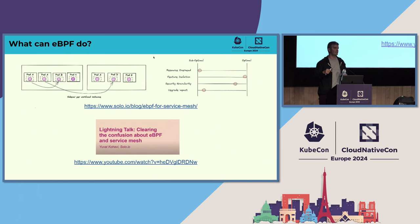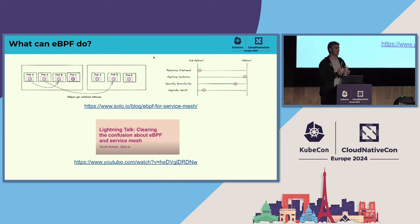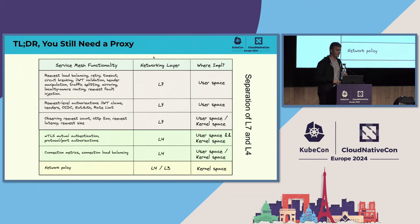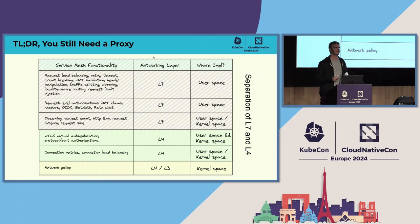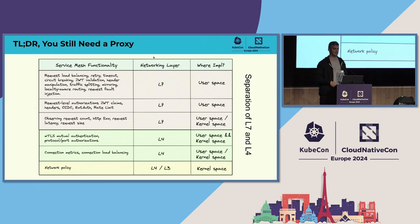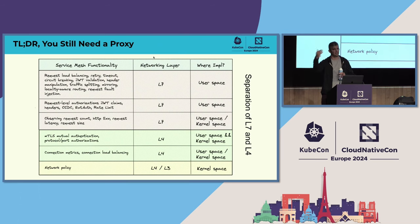What this boils down to is: there's a sidecar approach and a shared node approach, but there's also a gradient in between. The real question is where does that Layer 7 proxy run, because you still need it. You still need to do request-level things — retries, timeouts, circuit breaking, handling JWTs, validation, claims, request-level traffic splitting. It needs to be done somewhere; eBPF is not the appropriate place. Some service mesh capabilities are appropriate for the kernel, which is why you see Cilium — a CNI — building capability that way.